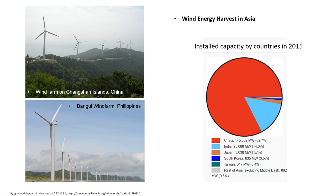Here is a pie chart representing wind energy harvest in Asia as of installed capacity by country in 2015. China leads, followed by India, Japan, South Korea, Taiwan, and the rest of the Asian countries, which collectively produce 862 megawatts, that is 0.5%.